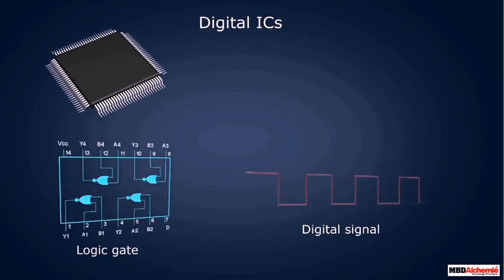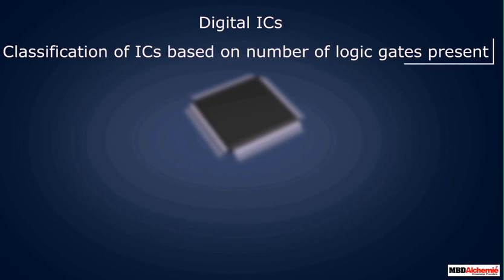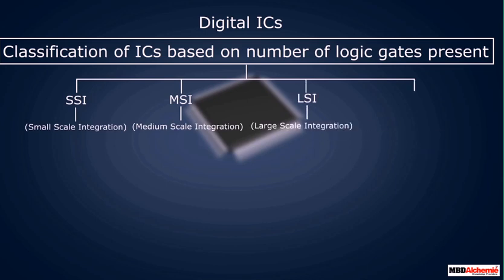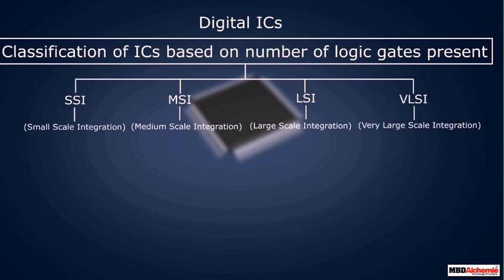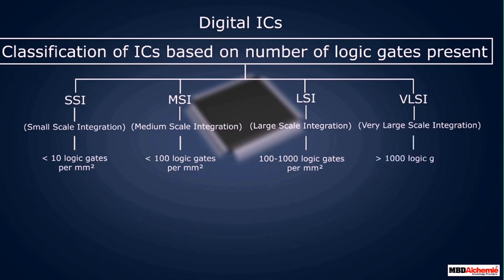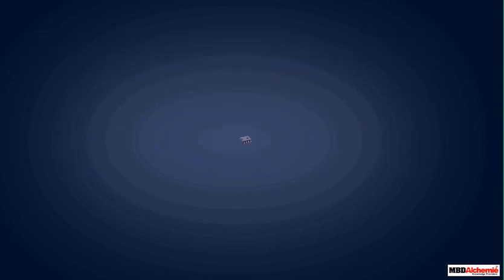In digital ICs, the input signals are digital signals that have only two values. They contain circuits such as logic gates. Based on the number of logic gates present, digital ICs can be further classified as SSI, MSI, LSI, and VLSI. SSI (small scale integration) has fewer than 10 logic gates per square millimeter. MSI (medium scale integration) chips have fewer than 100 logic gates per square millimeter. LSI (large scale integration) chips have 100 to 1000 logic gates per square millimeter. VLSI (very large scale integration) chips have more than 1000 logic gates per square millimeter.